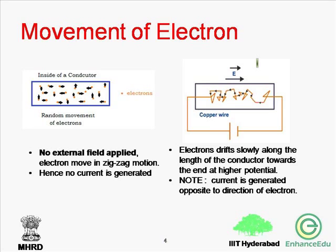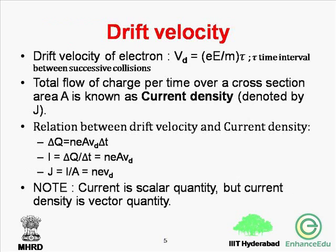Drift velocity is the small velocity imposed on the random motion of electrons in a conductor upon application of an electric field. It is also defined as the velocity with which free electrons get drifted towards the positive end of the conductor under the influence of an externally applied electric field. The drift velocity of electrons is given by v_d = (e·E) / m · τ, where τ is the average time between successive collisions, e is the charge on the electron, and m is the mass of the electron.